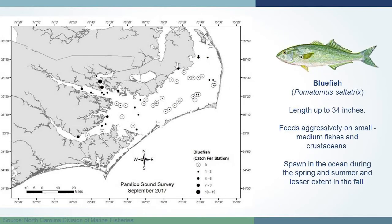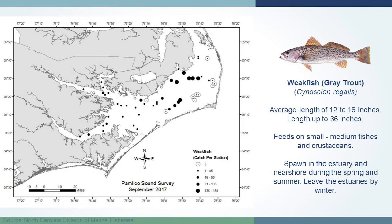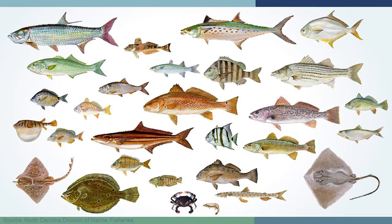The last finfish we'll discuss is the weakfish, a really popular target fish. Average length is 12 to 16 inches, getting up to three feet if you land a big one. They feed on small and medium-sized fish in the upper trophic level. Their lifecycle differs in that they spawn in the estuary and then overwinter out in the ocean. There's a lot we could cover, but with 15 minutes today we've just tried to give a sample of who's in the estuary.